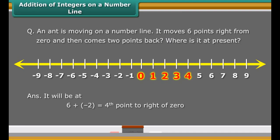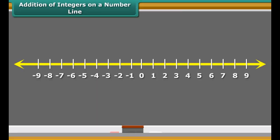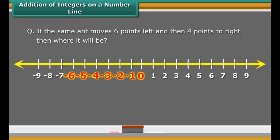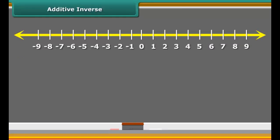An ant is moving on a number line. It moves six points right from 0 and then comes two points back. Where is it at present? It will be at 6 plus minus 2 equals the fourth point to the right of 0.